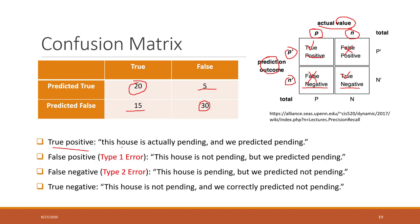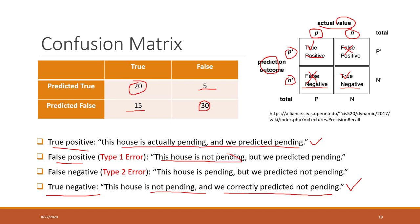True positive: the house is actually sold or pending, and we predict pending — correct. True negative: the house is not sold and we also predict correctly as not pending — also correct. False positive: the house is not sold but we predict as sold — this is also called the type one error. False negative is what we call the type two error. That is the confusion matrix.